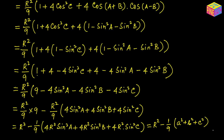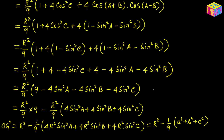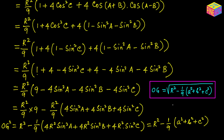So OG squared equals R squared minus (1/9)(a² + b² + c²), and therefore OG equals the square root of R squared minus (a squared plus b squared plus c squared) over 9. This is Form 2 for the distance between the circumcenter and the centroid. Depending on what information is provided in a problem, you can use either Form 1 or Form 2 — both are handy. I hope everything made sense. Thank you for watching, see you in the next video.